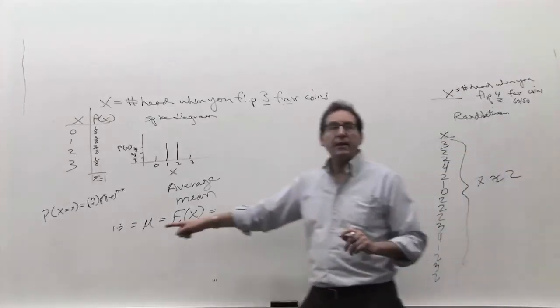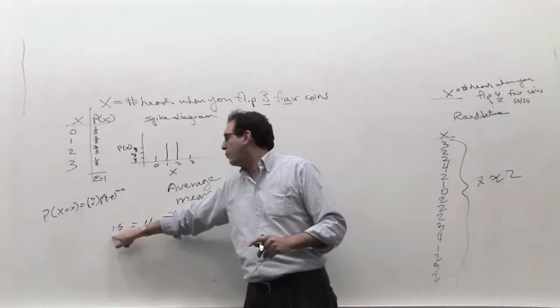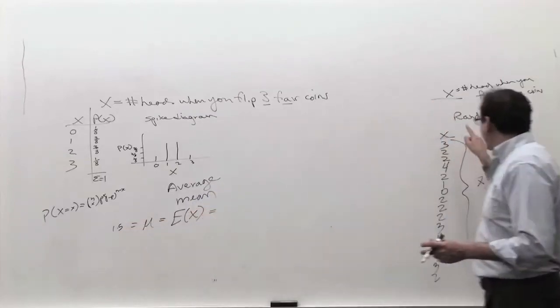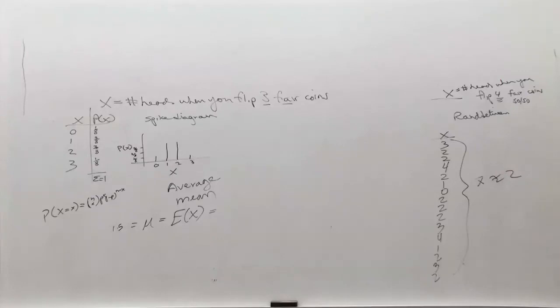One is by common sense, at least Tiffany's common sense is 1.5, hopefully everybody else agrees with that. The other way is by physically doing it, and when you do it, you're going to come out to 1.5 if you apply it to three coins.